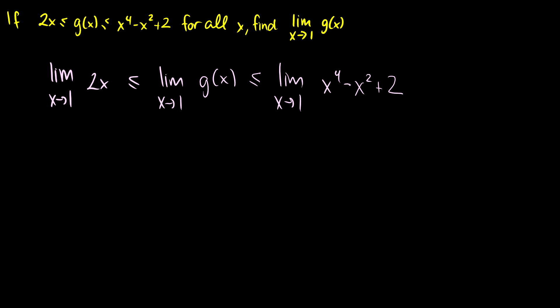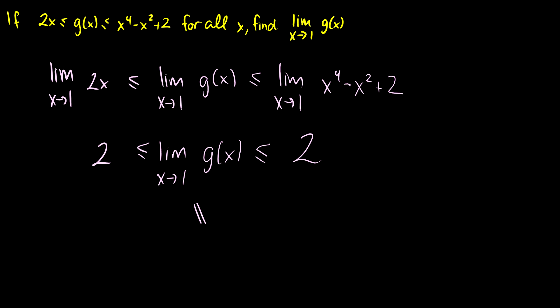We evaluate the left and right sides. The limit as x approaches 1 of 2x is 2 times 1, which equals 2. This is less than or equal to the limit as x approaches 1 of g(x), and we plug 1 into x to the 4 minus x squared plus 2, giving 1 minus 1 plus 2, which equals 2. Therefore the limit as x approaches 1 of g(x) equals 2.